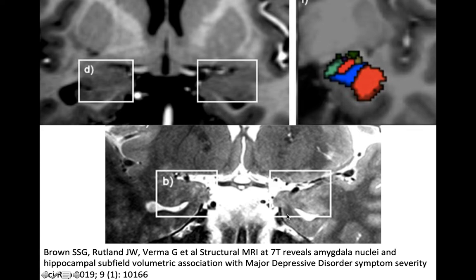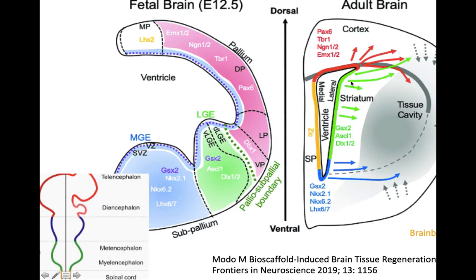These are seven Tesla in-vivo scans, with T2-weighted images at 0.21 mm and T1-weighted images at 0.7 mm voxels. The different nuclei in the amygdala have been labeled with different colors, and these nuclei have different origins — some derived from the subpallium and some from the pallium.